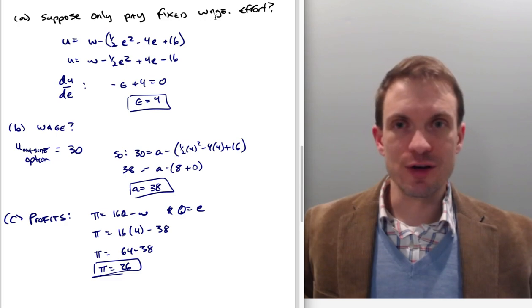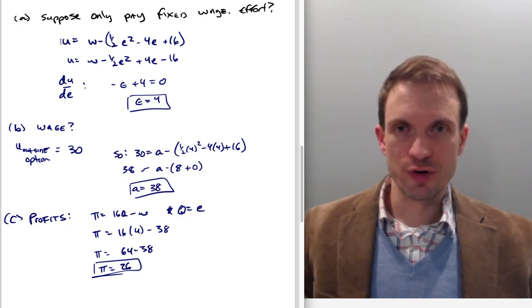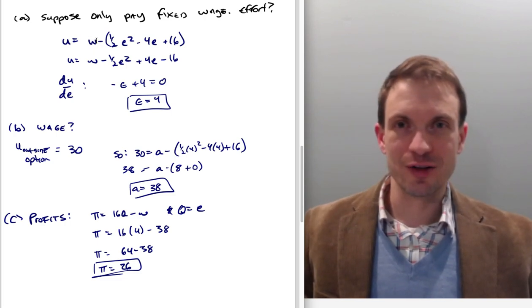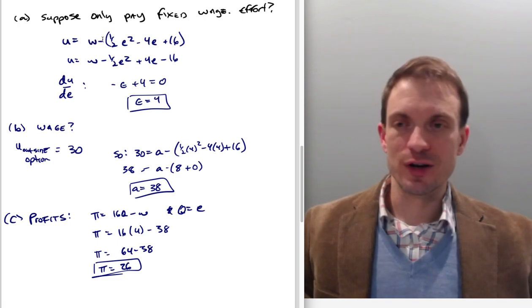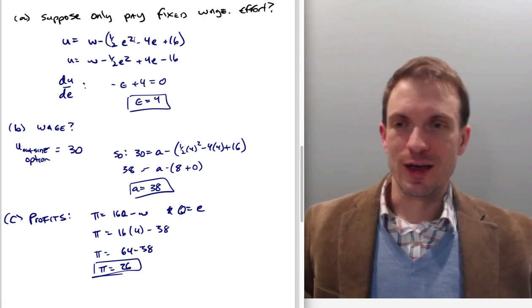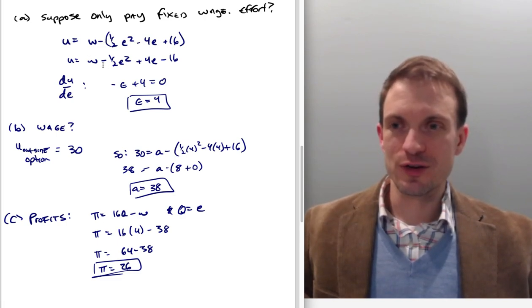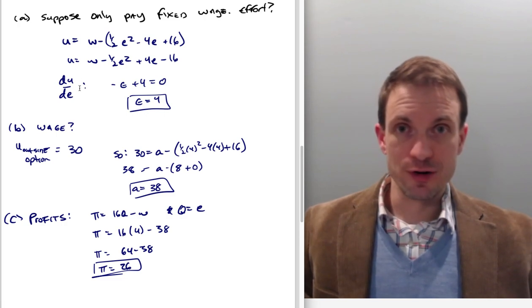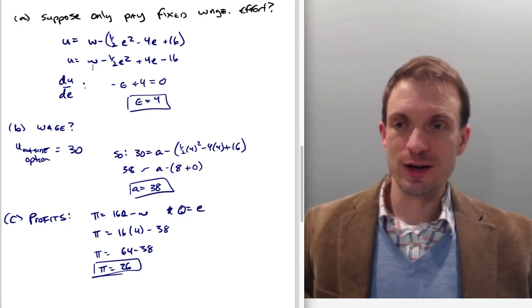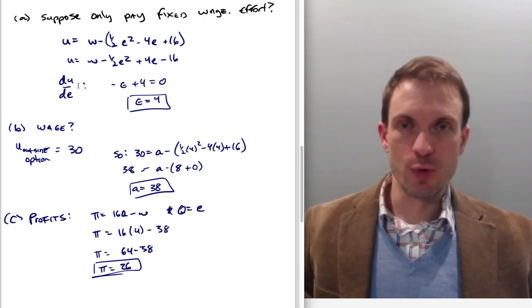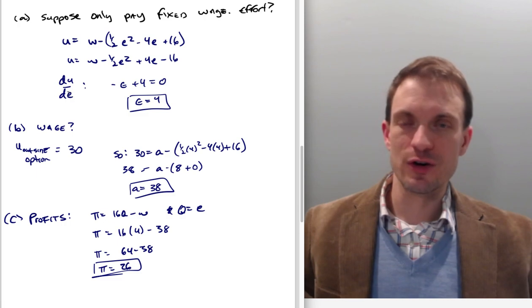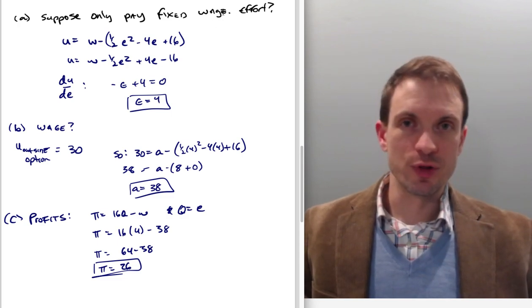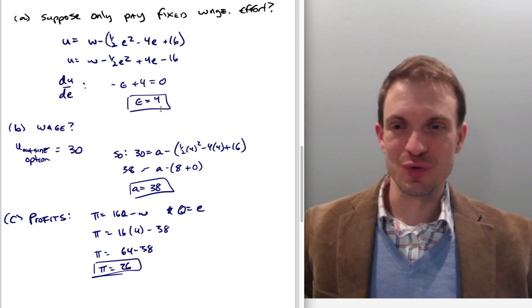Well, so we need to write down the worker's utility function that is going to be given by their wage, which is just the entire compensation - in this case it's a fixed contract, so it'll just be the fixed component minus the effort cost function. Alright, so W - (1/2)e² - 4e + 16, and then distributing the sign and then taking the derivative, differentiating utility with respect to effort. So the idea here is we want to find - this is the worker's utility maximization problem where they're choosing their effort level. So take the derivative with respect to our choice variable, in this case effort, we find the optimal effort level is 4 for the worker.